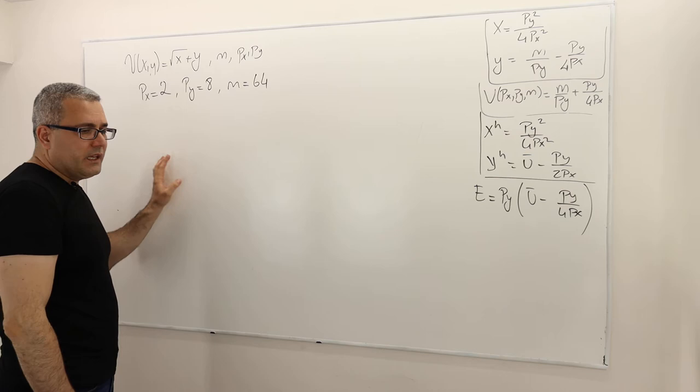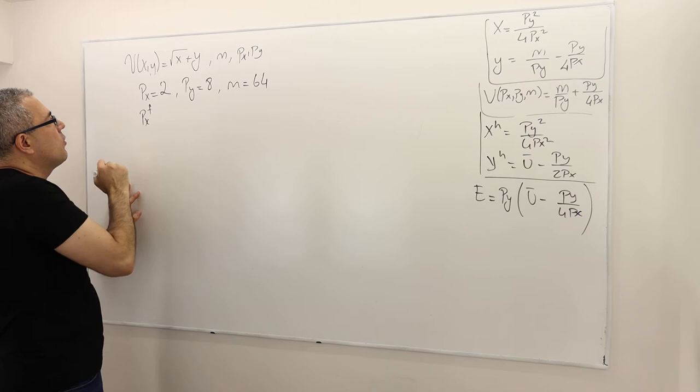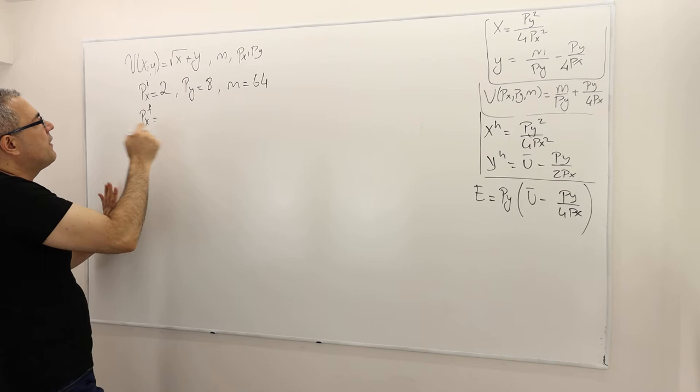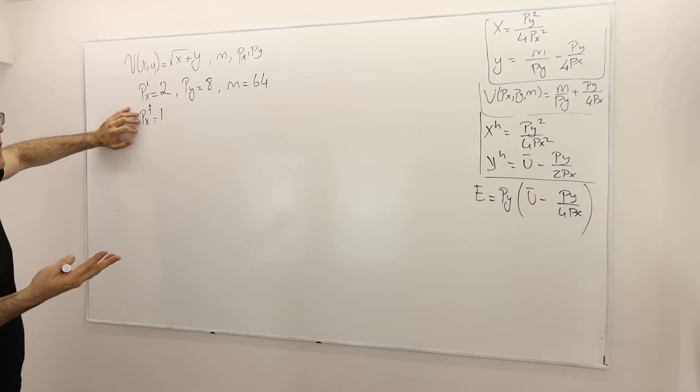Part E asks: what is the substitution and income effects on good X when the price of good X reduces to one? So PX initial — these are initial values. I'm going to put PX_I. The price of good Y is going to be fixed. PX_F, the final price for good X, is one dollar.